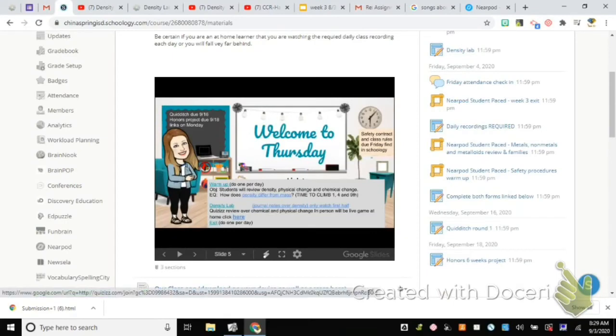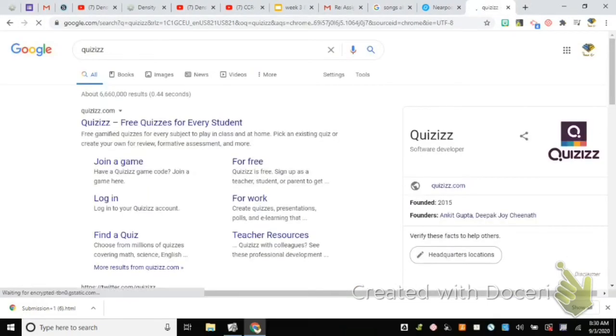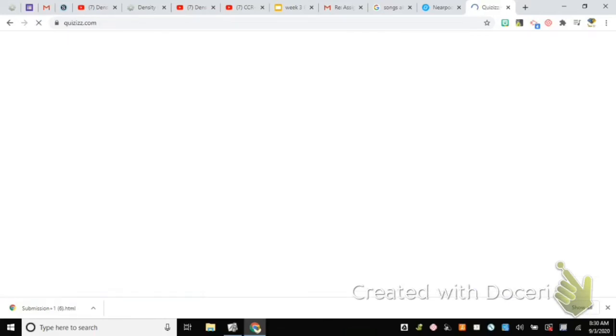So within Schoology, it says quizzes review over physical and chemical changes. That link there is for my at-home learners. I do also want to say at-home learners, for those journal notes, you can use your digital journal and you're simply going to type those notes in versus writing them down. Now, you could write them down on a piece of paper, you could take a picture of that piece of paper, you could upload it to your computer, and then insert that image into your digital journal. So you can find a solution to getting that in there that works best for you.